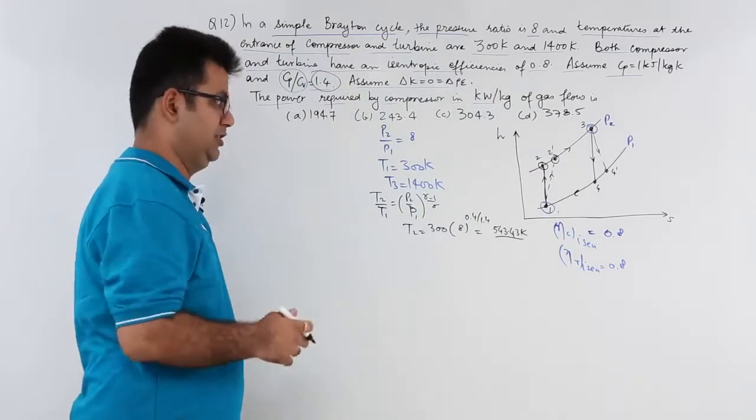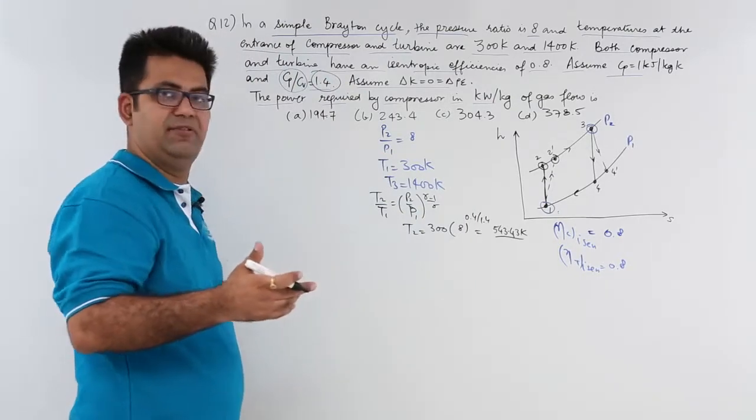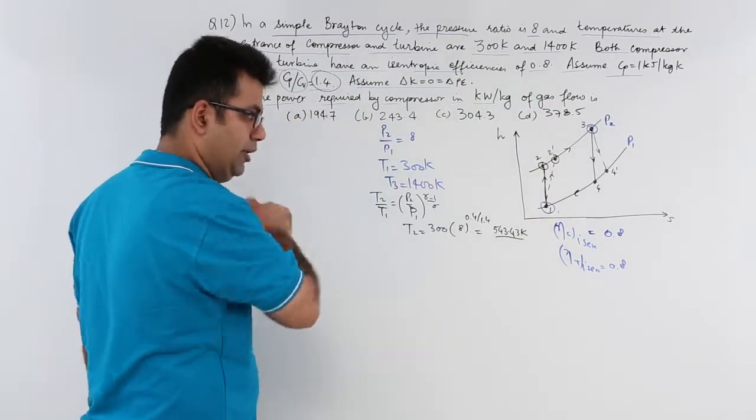So this is T2 as per the ideal process. Now the isentropic efficiency will provide us with the actual temperature.